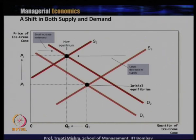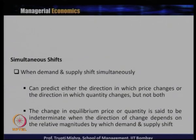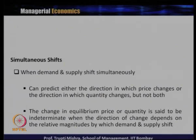The reason is that the decrease in supply is greater than the increase in demand, and that leads to the situation where at the new equilibrium point the equilibrium quantity decreases from Q1 to Q2. So when supply is decreasing, demand is increasing, and the decrease in supply is greater than the increase in demand — at the new equilibrium, the equilibrium price increases; however, there is a decrease in the quantity demanded. These are the two cases when there is a simultaneous shift in both demand and supply.